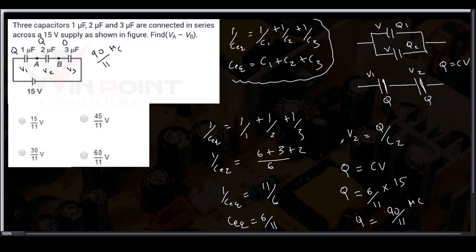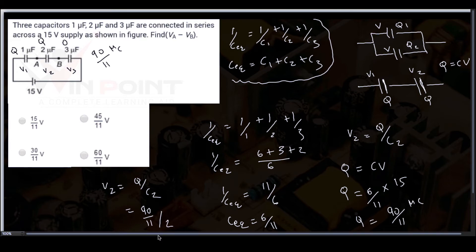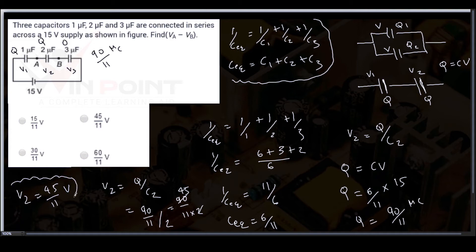Now we need to find V2, the potential difference across the two microfarad capacitor, that is VA minus VB. Using V2 equal to Q by C2: that is 90 by 11 divided by 2. Taking the multiplicative inverse gives 90 by 11 into one half, which equals 45 by 11. So V2 equals 45 by 11 volts.